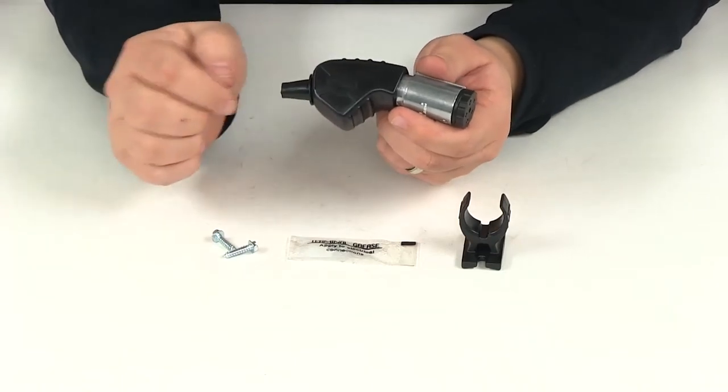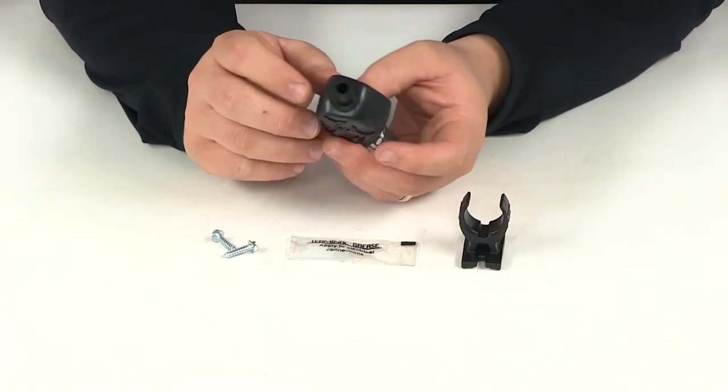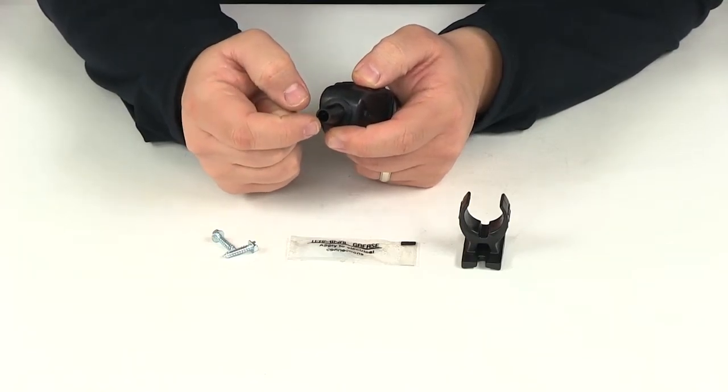That's going to expose the connection points. You can place the wire through, make the connections as necessary, and then make sure it feeds out through this area here.